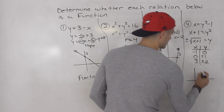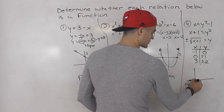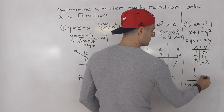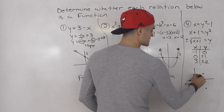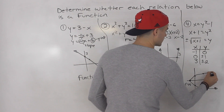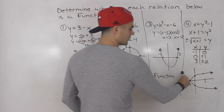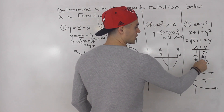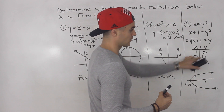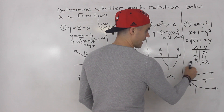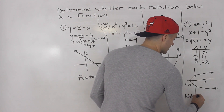Drawing this out: the point (negative 1, 0) is here; (0, plus 1) and (0, minus 1) are here; (3, plus 2) and (3, minus 2) are here. This forms a sideways parabola. Is it a function? Run a vertical line through it — it fails. For example, x = 0 has two dependent variables, plus 1 and minus 1; x = 3 has two dependent variables, plus 2 and minus 2. So it fails the vertical line test and is not a function.